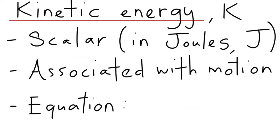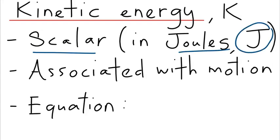Kinetic energy is a scalar, as with any other type of energy, and it is measured in the SI unit of joules — the abbreviation is capital J. Kinetic energy is the type of energy associated with motion. If an object is moving, it has kinetic energy. If the object is at rest or stationary, its kinetic energy is zero.